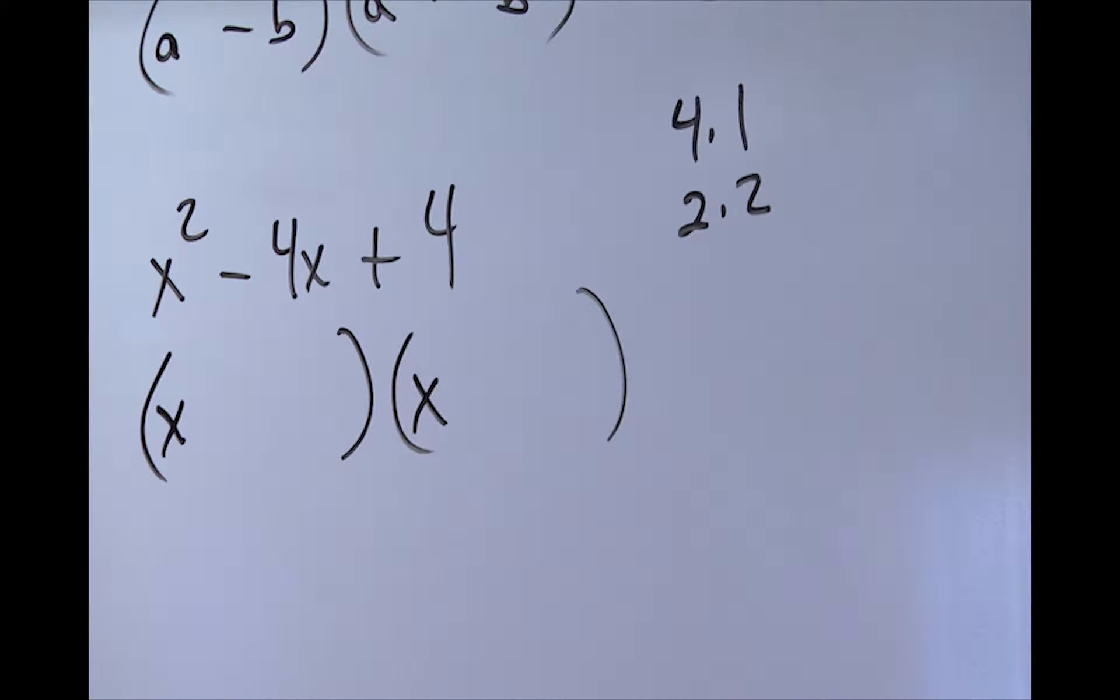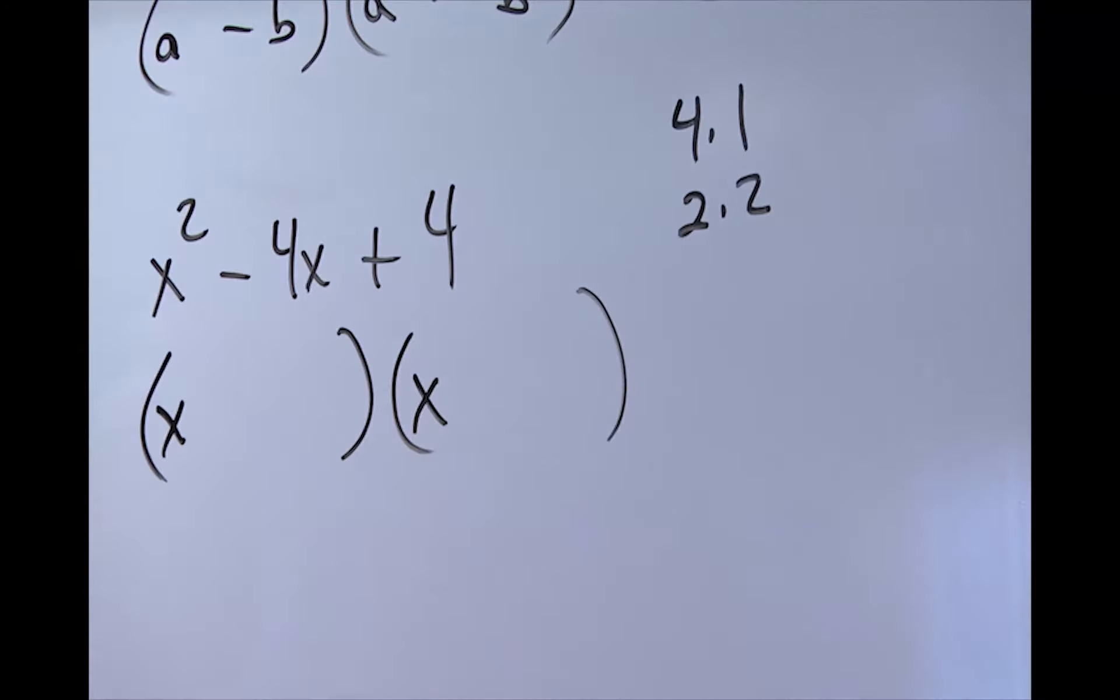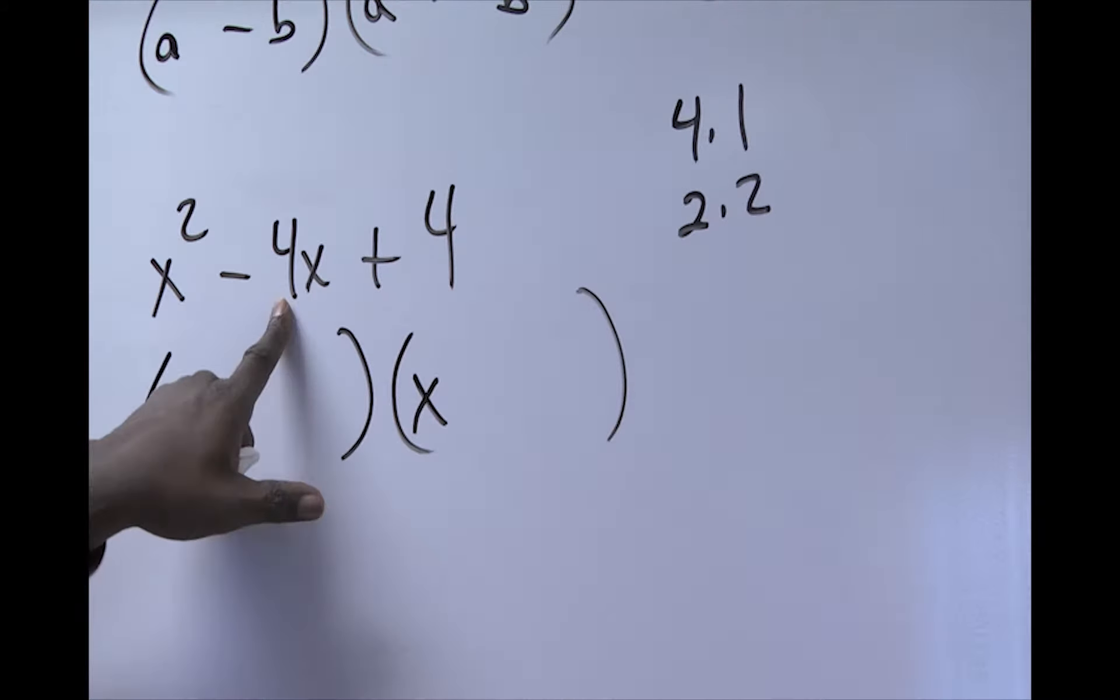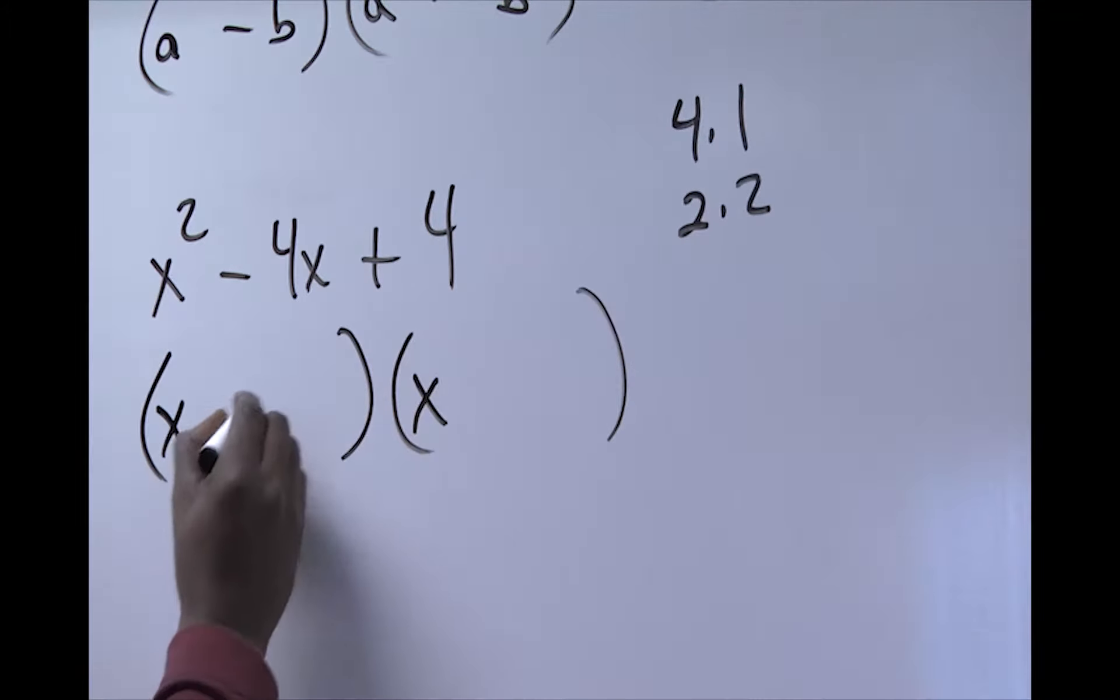As I mentioned to you before, you always want to try to get the one that's closely related. In this case, that is 2 and 2. We also note that 2 plus 2 is equal to 4 in the middle.